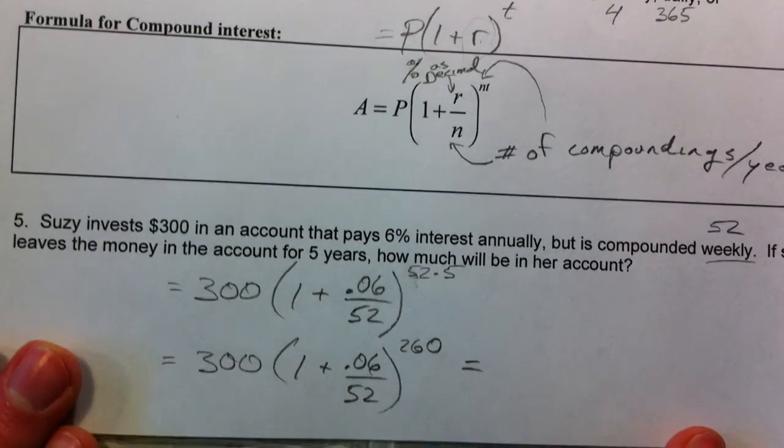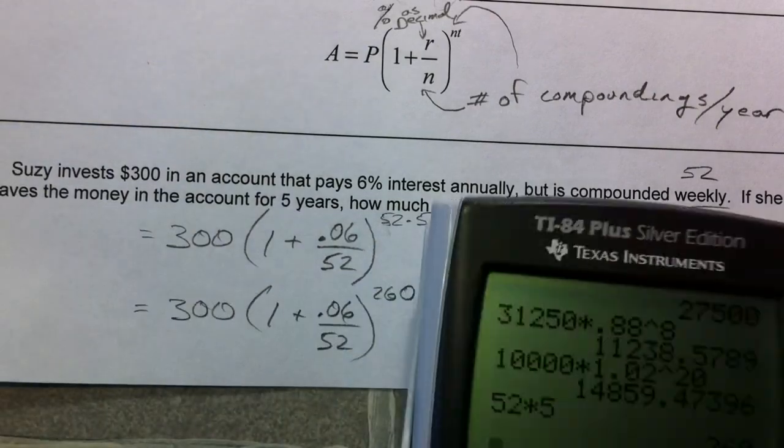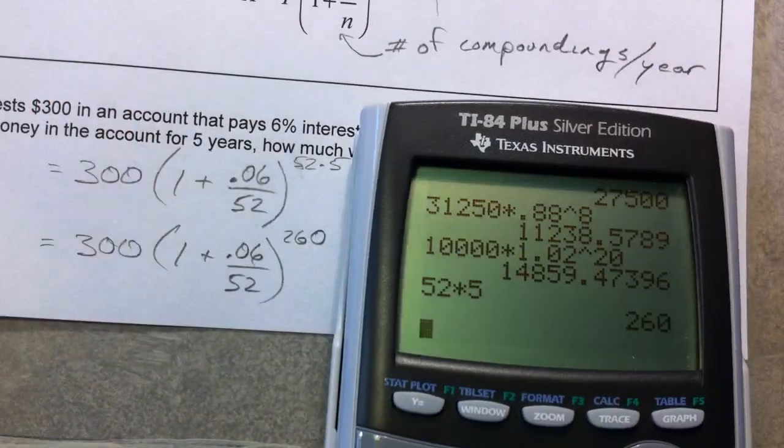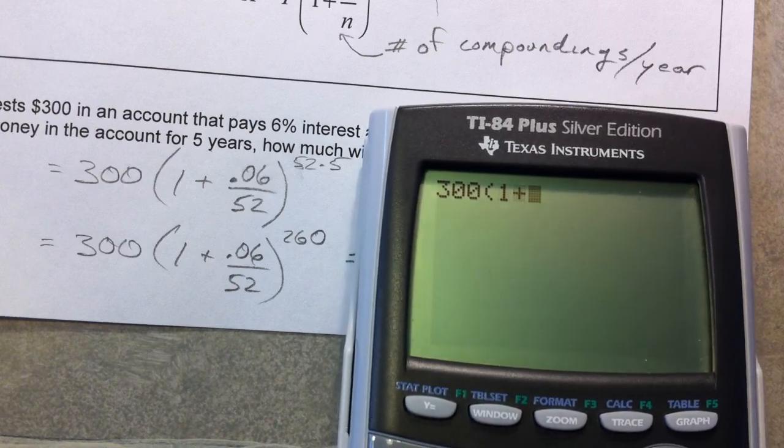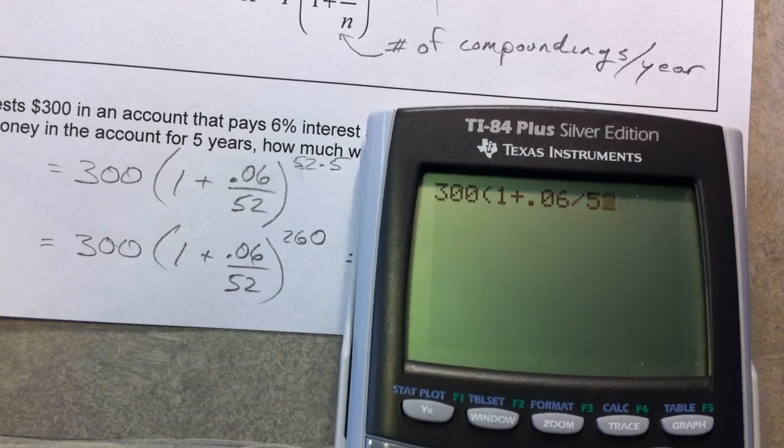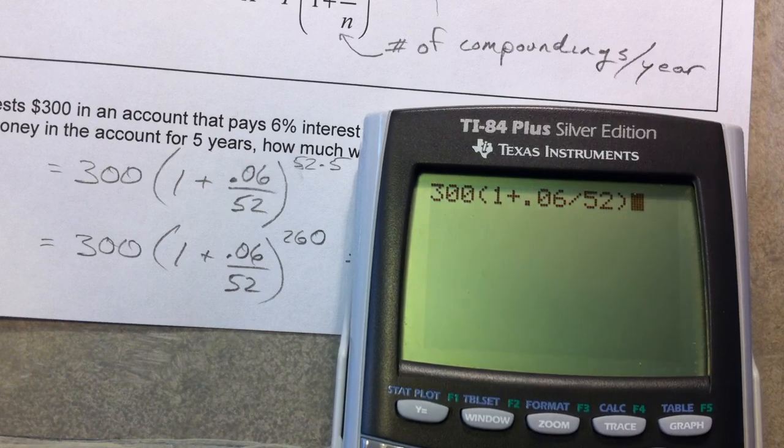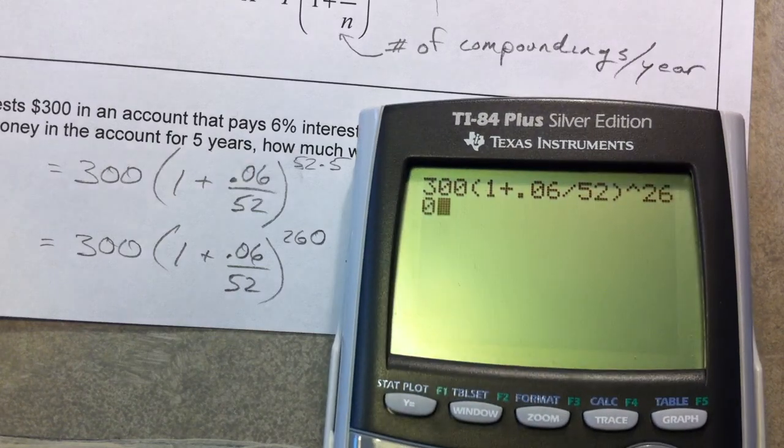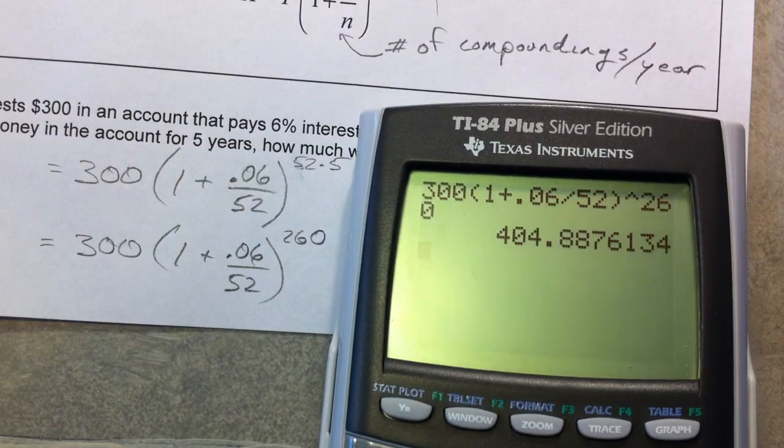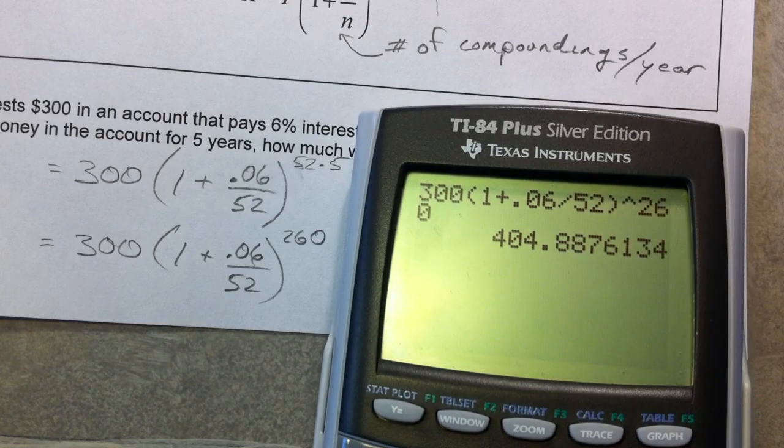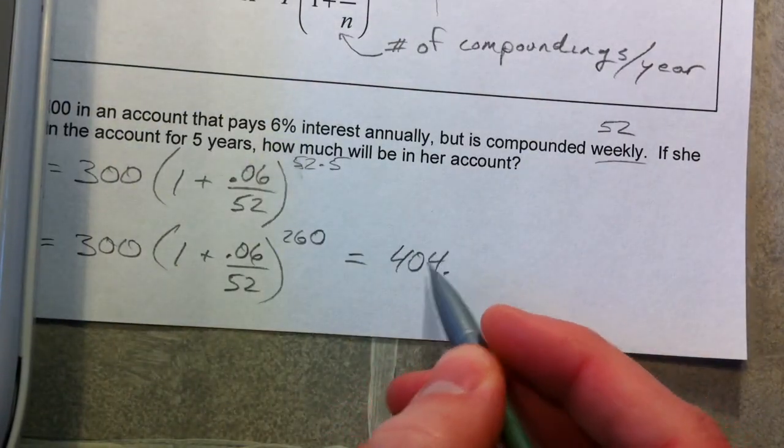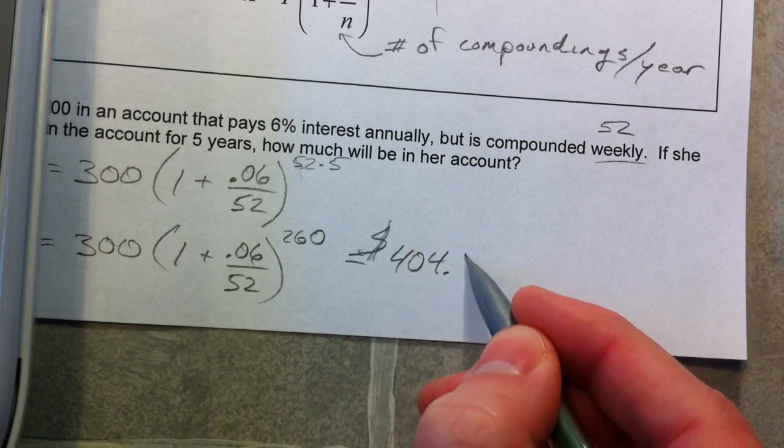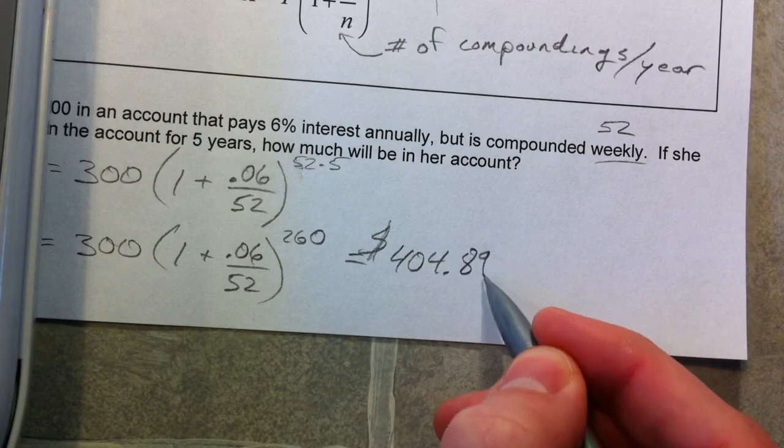All right, let's see how much money Susie's going to have. So 300 times 1 plus our 0.06 divided by 52, and I'm going to raise that to the 260 power. So she's going to have $404.89.